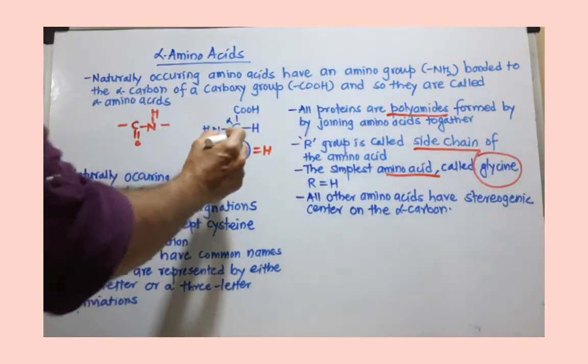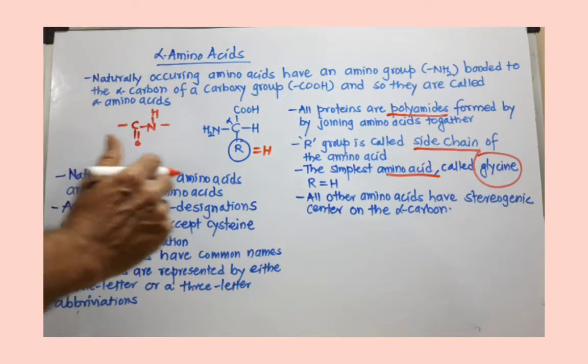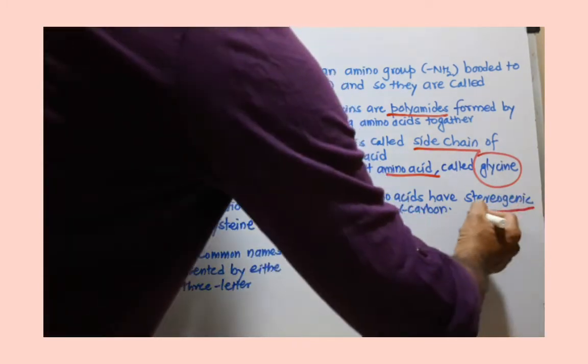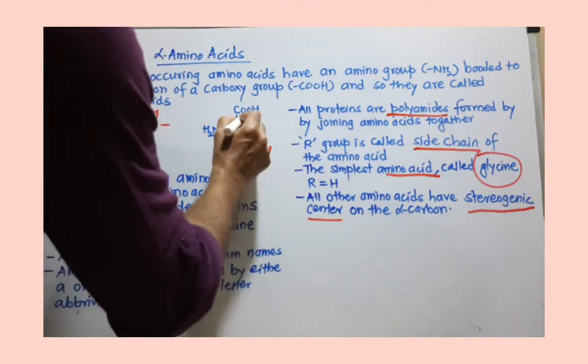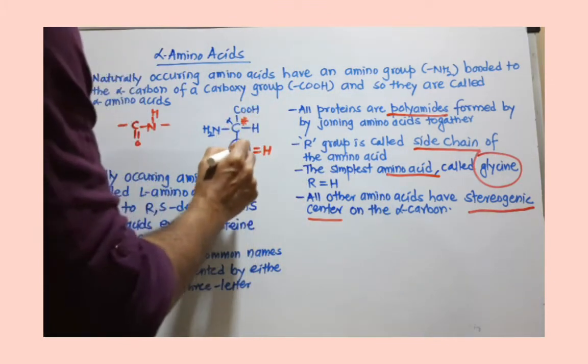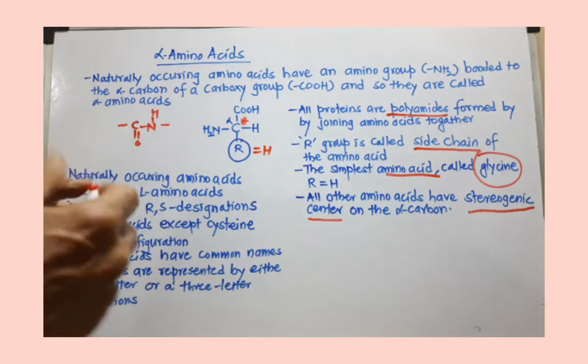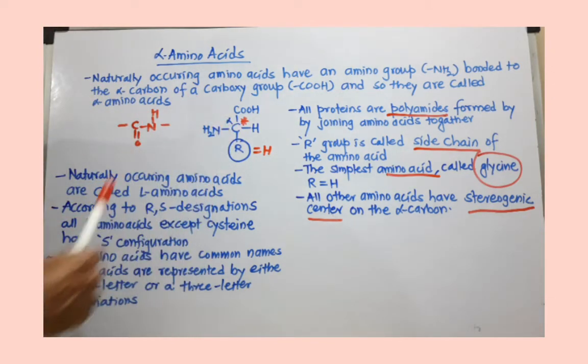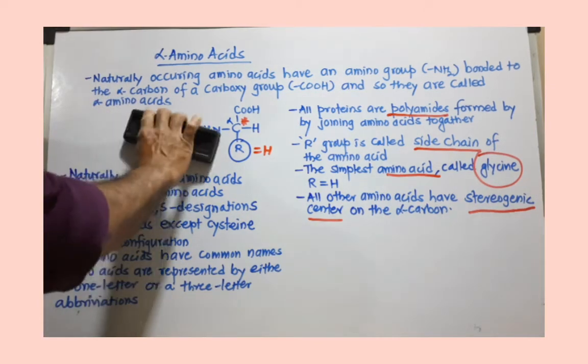Except for glycine, amino acids have a stereogenic center, a chiral carbon. All amino acids except glycine have this kind of stereogenic center. This is another important point to remember.